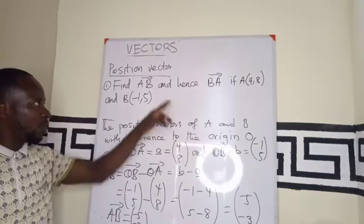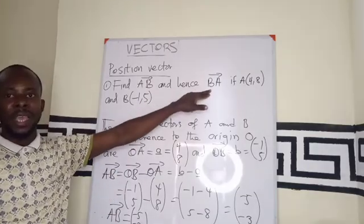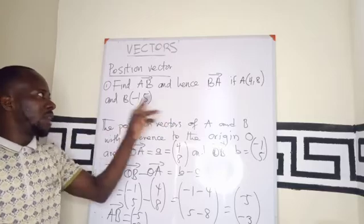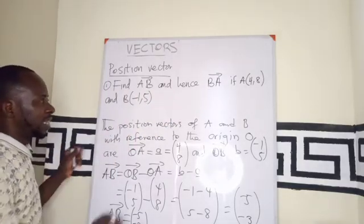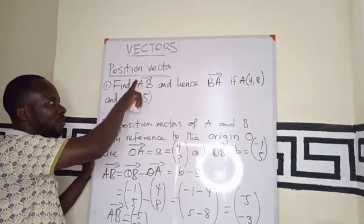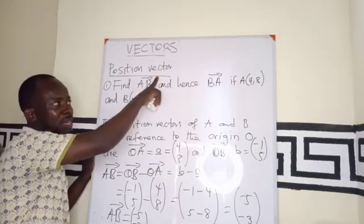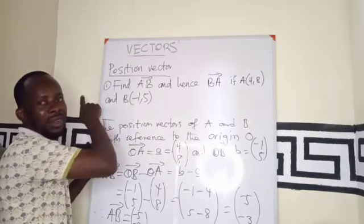But the second aspect is saying that we should also find BA. If you are asked to find BA, given vector AB, that simply means that the direction is moving from A to B, as the original. Now, we are changing direction.